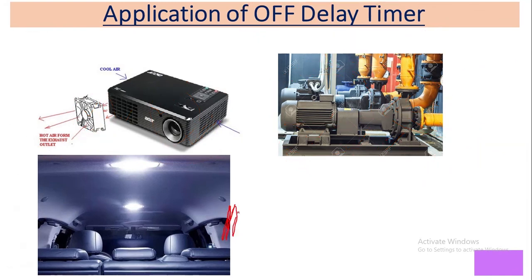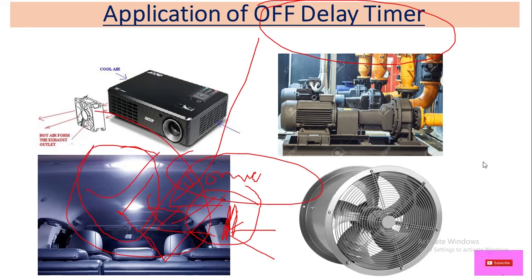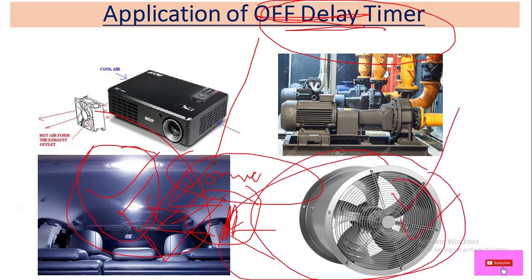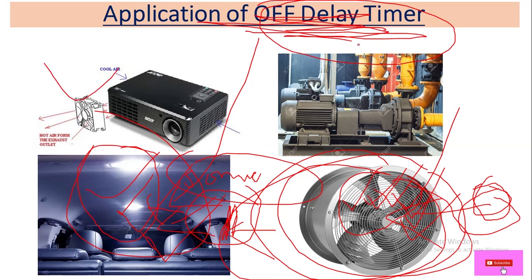Another application is car interior lights: when you close the door the lights stay on for a few seconds because of an off-delay timer. Another application is exhaust or fresh air ventilation fans, which continue running for a set delay after being switched off to complete their ventilation cycle.